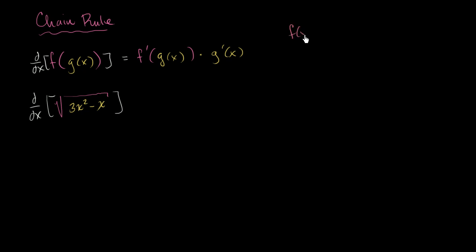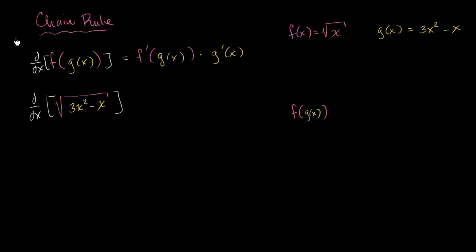We could define f of x as being equal to the square root of x, and g of x as being equal to 3x squared minus x. Then f of g of x — everywhere you see the x you replace it with g of x — gives the principal root of g of x, which equals the principal root of 3x squared minus x. So this expression is exactly f of g of x with these definitions.